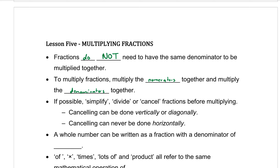Now that's the simplistic form, but there is some extra stuff to note. If possible, we want to simplify, divide, or cancel — all those things basically mean the same thing. We want to simplify our fractions first. To do that, we're going to be doing something called cancelling. Cancelling can be done either vertically or diagonally.